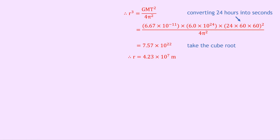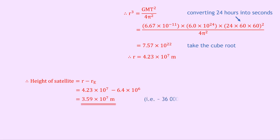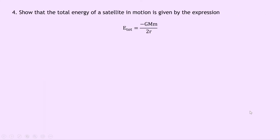Remember we're not finished yet — all we've done is find the value of r. To find the height of the satellite above the surface, we subtract: height of satellite equals r minus the radius of the Earth. Substituting in our numbers, we get 4.23 times 10 to the 7 minus 6.4 times 10 to the 6 from the datasheet, giving an answer of 3.59 times 10 to the 7 metres, i.e. about 36,000 kilometres, which is the typical height of a geostationary satellite above the Earth's surface.